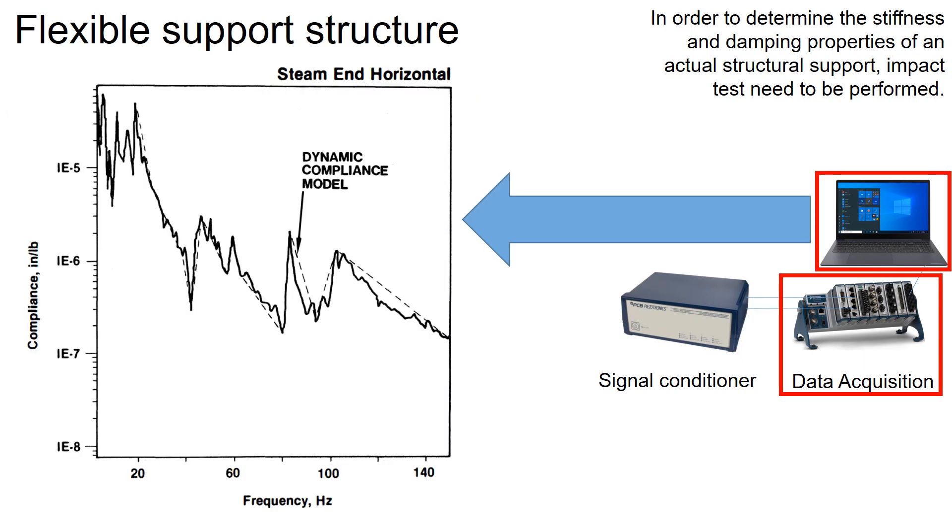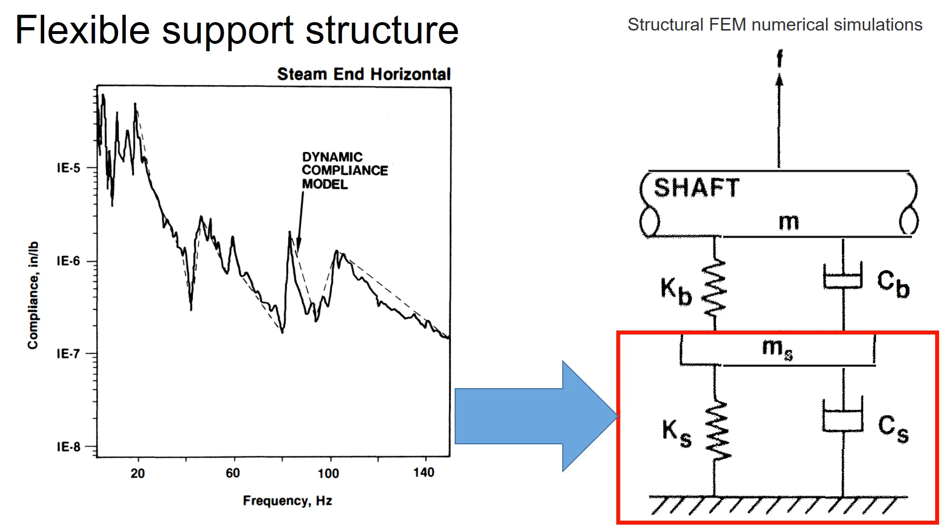The resulting frequency spectrum can be plotted on a computer, helping us analyze the support structure properties. With the collected test data, we can then input the stiffness and damping information into our rotor dynamic model.